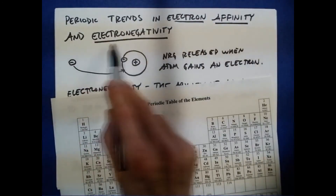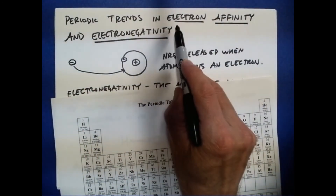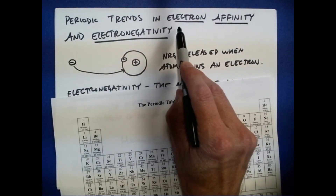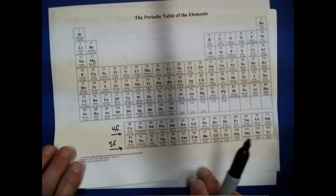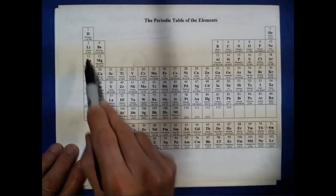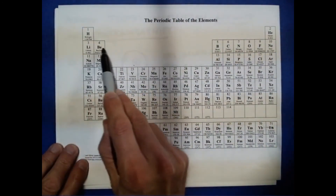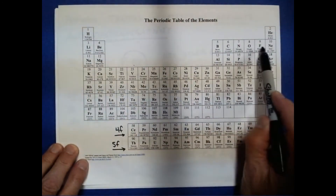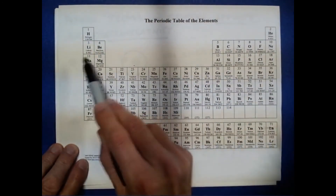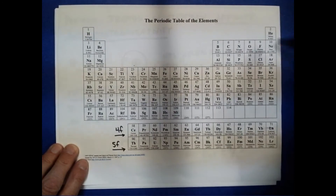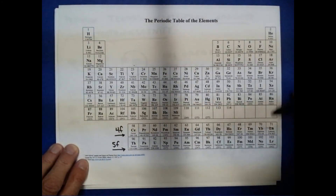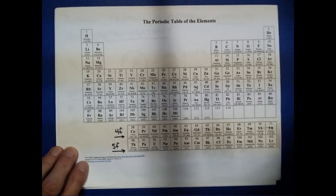Electronegativity generally tracks electron affinity, so we also expect electronegativity to go up as we move across a period. All of these trends refer to elements excluding the noble gases.